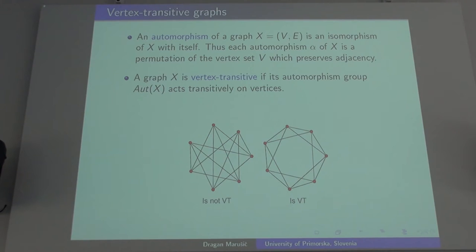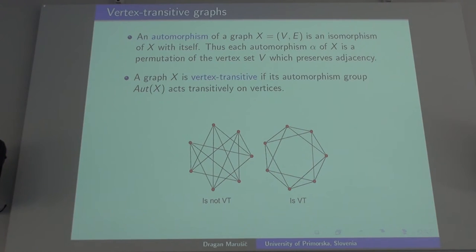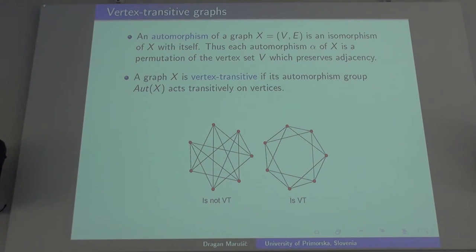It's just a symmetric relation not containing the identity relation. The graph on the left hand side is not vertex transitive. If you take the complement of the graph on the left hand side, the complement is the union of a triangle and a quadrangle, and of course there is no way you can map a vertex which lies in a triangle to a vertex that lies in a quadrangle.